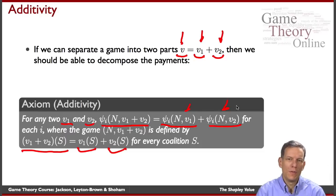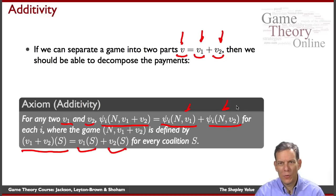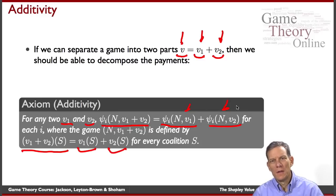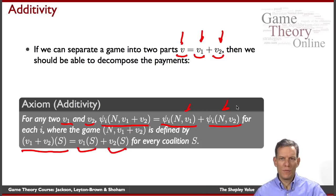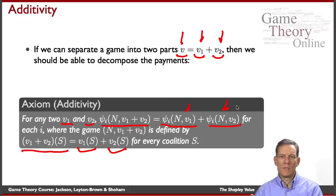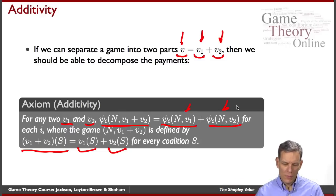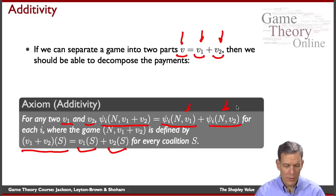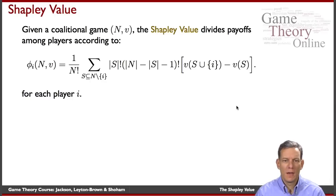In terms of how to interpret this axiom — you could think of a story where society one day produces according to v1 and the next day according to v2, and if what it produces the second day doesn't depend on the first day, then we should be able to allocate the fruits of production on each day separately. What an individual gets is just the sum of those two allocations. You can think of a fairly logical story for this kind of axiom.